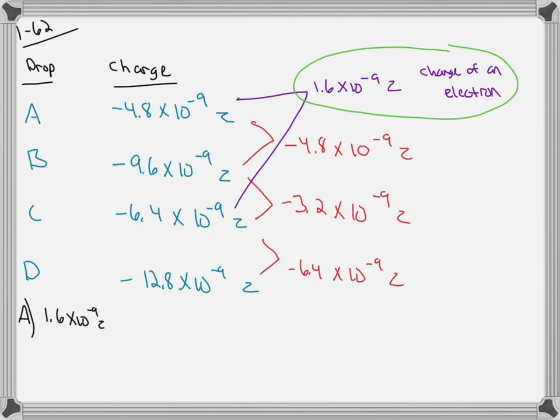We then need to figure out how many charges of 1.6 times 10 to the negative 9 zorgs makes each total charge. Well, 1.6 times 10 to the negative 9 zorgs multiplied by 3 gives us the charge on droplet A. So it has 3 electrons.